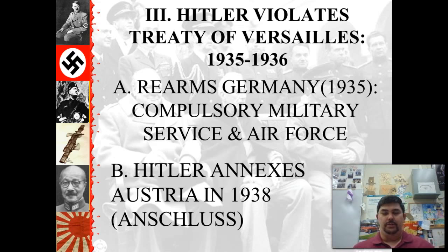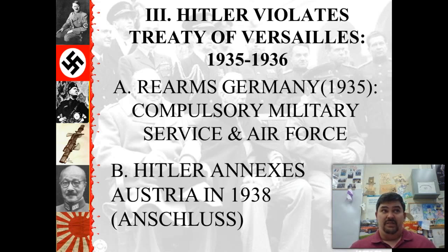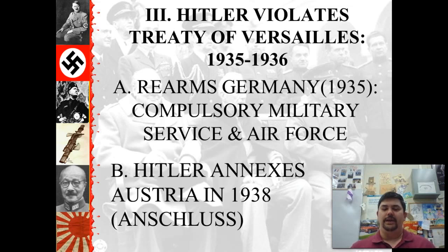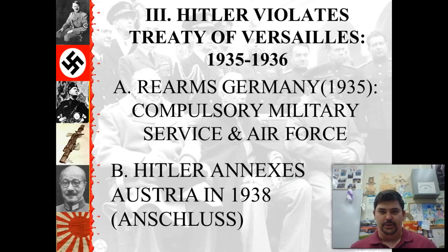No one does anything about the Rhineland. A lot of people are sympathetic — they say we were kind of harsh on Germany, maybe we should let him have these things. So Hitler's emboldened, and he says he's going to take over Austria. That's also forbidden by the Treaty of Versailles — making an alliance between Germany and Austria — but Hitler just does it.